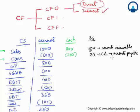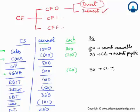For selling, general and administrative expenses (SG&A), which were 100, let's assume only 50 was paid in cash. The remaining 50 is an unpaid expense, so it is recorded as a current liability. This goes under the heading of accrued expenses.